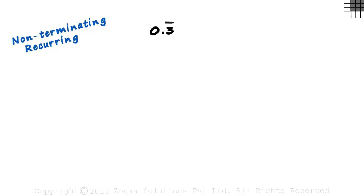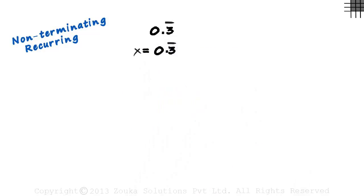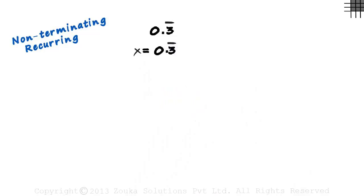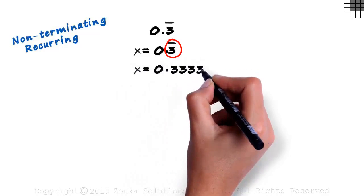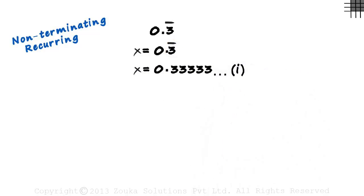It's simple but interesting. Let's equate x with 0.3 bar. You will know soon as to why we are doing this. A bar over 3 means x equals 0.3333 and so on. Let this be our first equation.